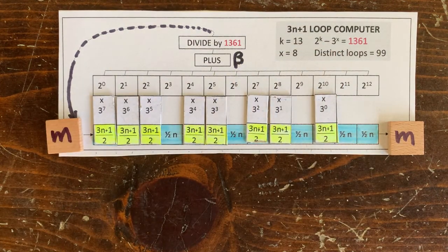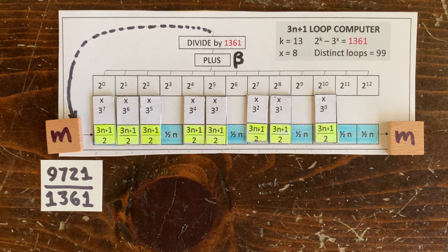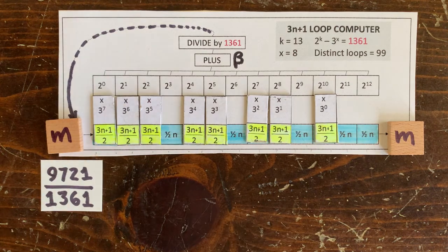In this case, m equals 9721 over 1361, which is not an integer. Now if we keep moving these pieces around, can we find an integer loop?